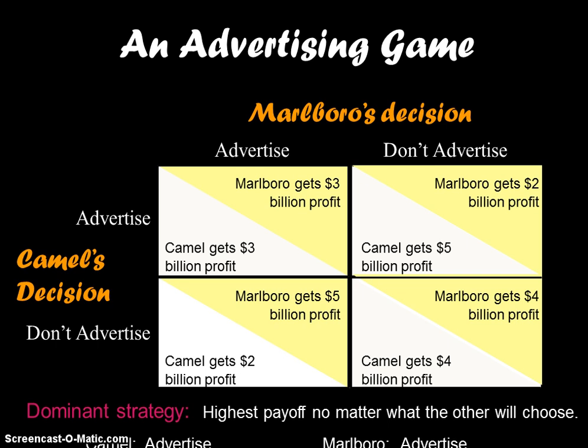For Marlboro, their dominant strategy is going to be to advertise, because then whether or not Camel advertises or doesn't advertise, Marlboro is going to be okay. The reason that Marlboro's dominated strategy is not to advertise is that if Marlboro doesn't advertise but Camel decides to go ahead and advertise, Marlboro is totally going to lose. You have to look at what is the player's best case scenario, assuming the worst from their competitor.